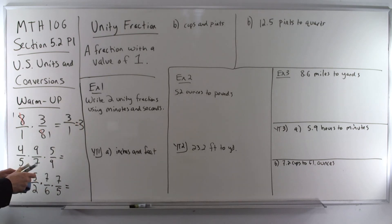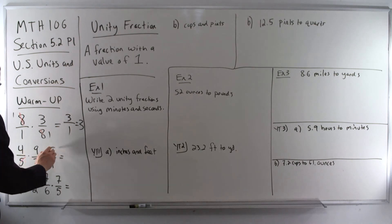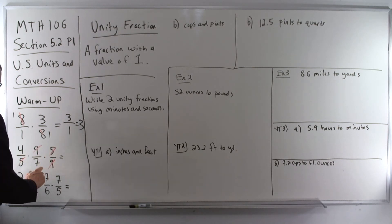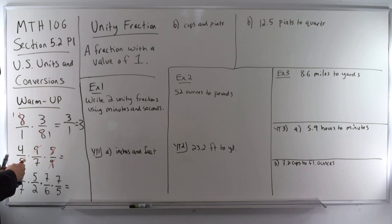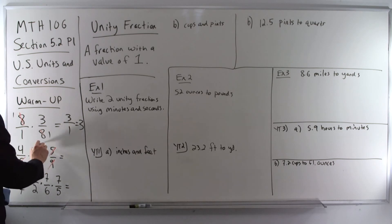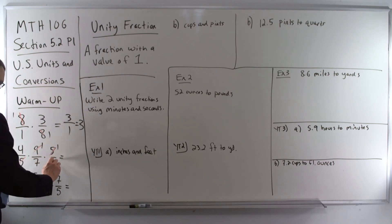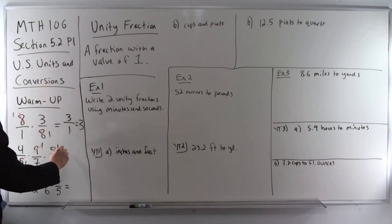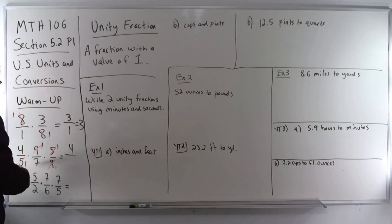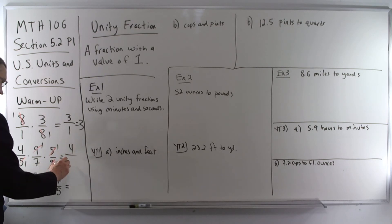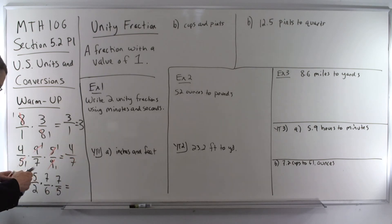Second one, we've got two matching pairs here. We've got a matching pair of 5's — those are gone. Matching pair of 9's — those are gone. Turn them into 1's. 4 times 1 times 1 gives us 4 on top. 1 times 7 times 1 gives us 7 on the bottom.